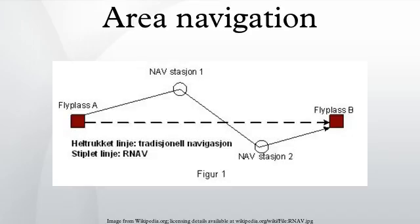Flight technical error (FTE) relates to the aircrew or autopilot's ability to follow the defined path or track, including any display error or centering error. FTE can be monitored by the autopilot or aircrew procedures, and the extent to which these procedures need to be supported by other means depends, for example, on the phase of flight and the type of operations. Such monitoring support could be provided by a map display. Navigation system error (NSE) refers to the difference between the aircraft's estimated position and actual position.